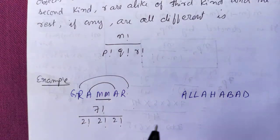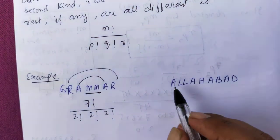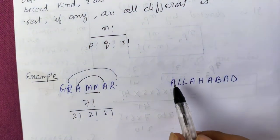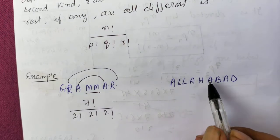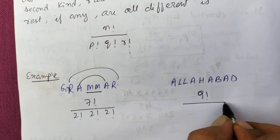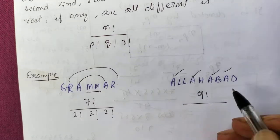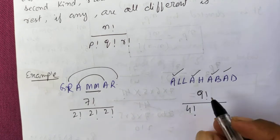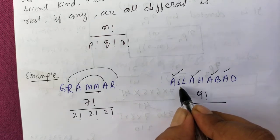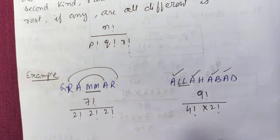For example, to arrange the word ALLAHABAD — 9 letters total — we can arrange in 9! ÷ (4! × 2!) ways, since A appears 4 times and L appears 2 times. That is how we handle arrangements when some letters are repeated.